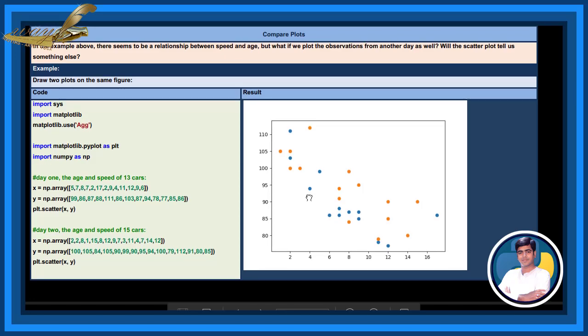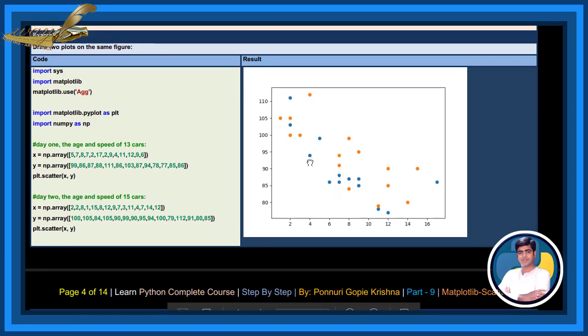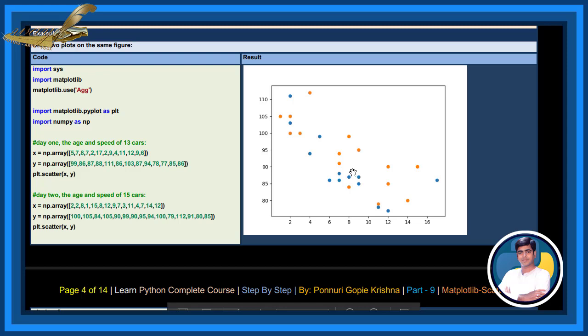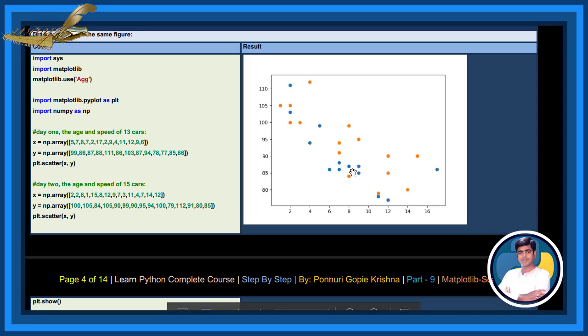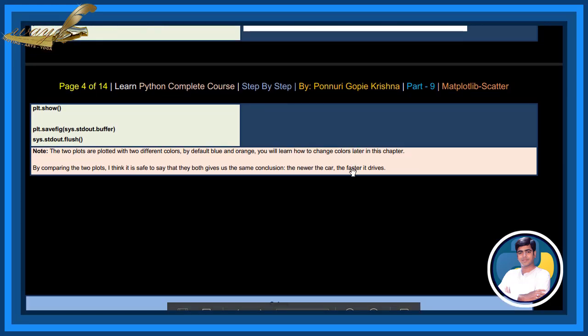Day 1, the age and the speed of 13 cars. Day 2, the age and speed of 15 cars. See here dots, orange and blue. The two plots are plotted with two different colors. By default, blue and orange. You will learn how to change colors later in this chapter. By comparing two plots, I think it is safe to say that they both give us the same conclusion that the newer the car, the faster it drives.